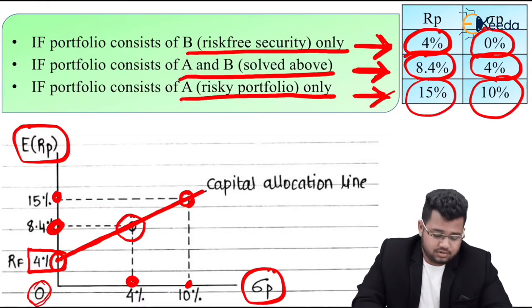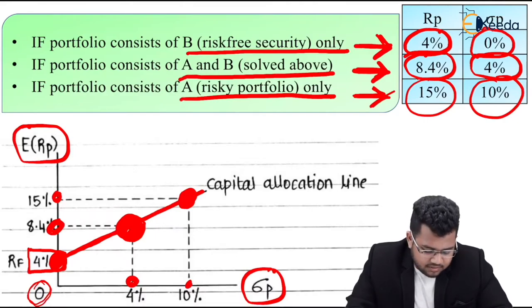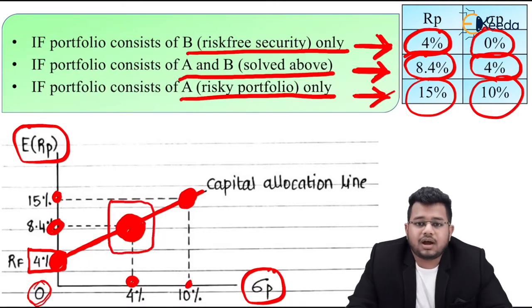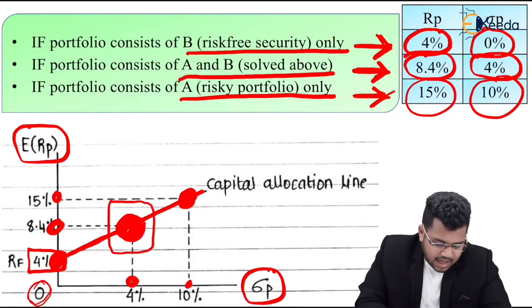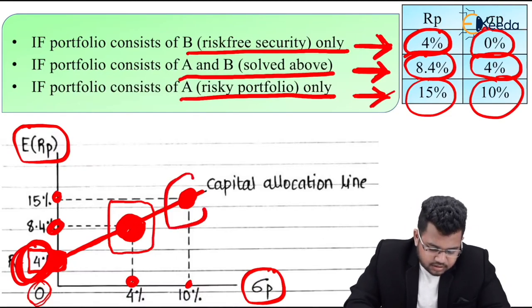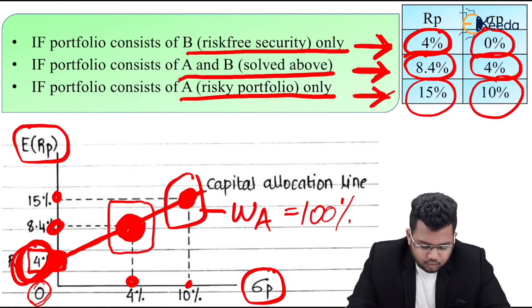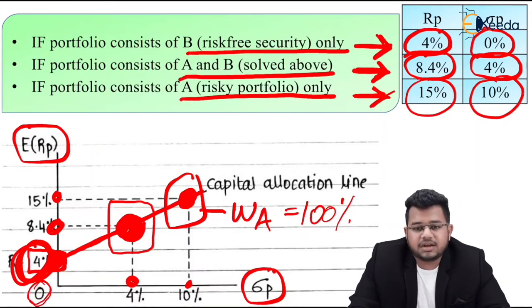So this line is known as capital allocation line. It starts with a risk free asset and it will end with a risky portfolio. This 4% was the risk free asset, then in the middle some different portfolios will come, and at the end it becomes risky portfolio. So this line is cutting - what is it cutting? It's cutting this middle portfolio. This line, many different portfolios will lie on it. This line starts with WB 100%. If you start from RF which is 4%, then WB was 100%. It ends with this point where WA was 100%. That means if I put everything in B, I get 4%. If I put everything in A, I get 15%. Now in between both, if you want to fall, WA, WB can be anything, but it will fall on this line. So this line cutting through is the capital allocation line.